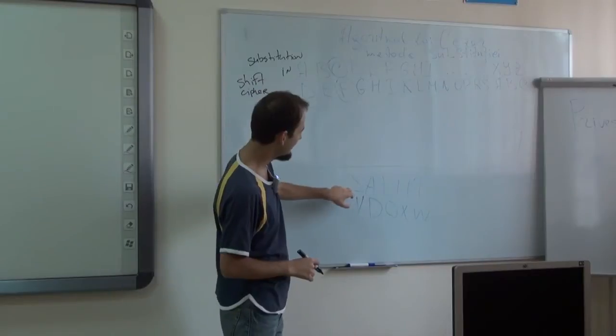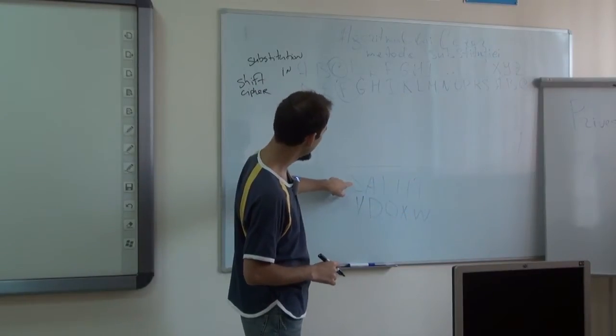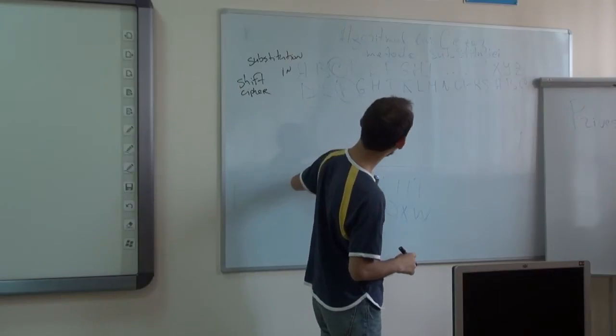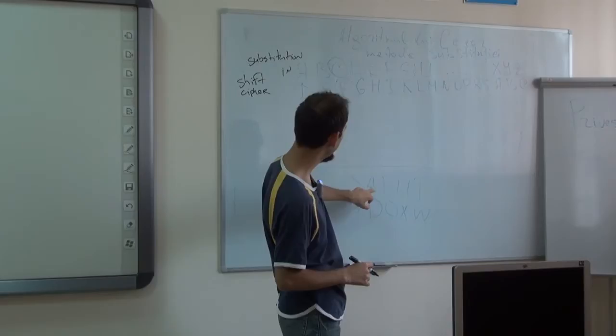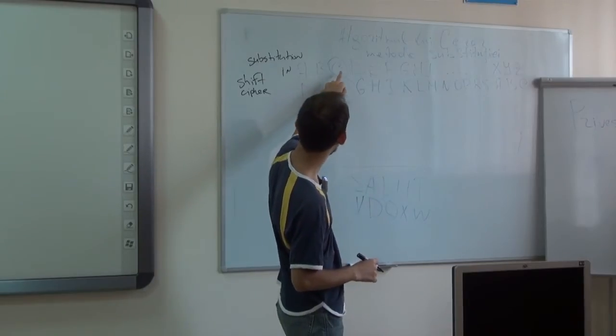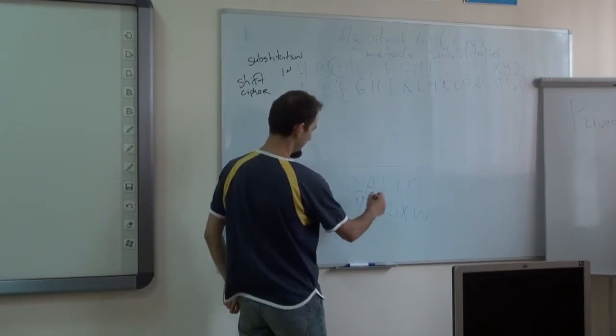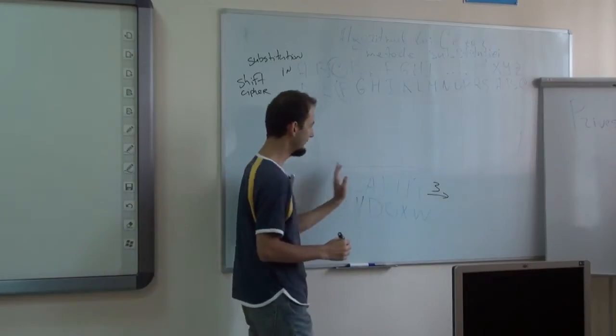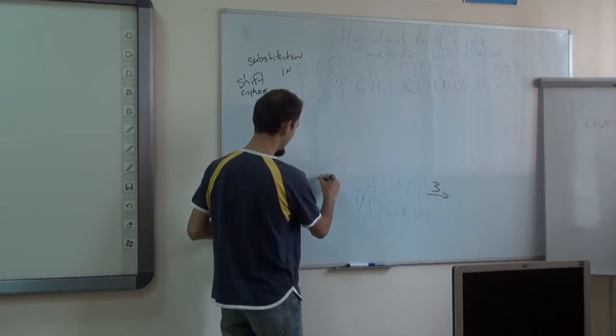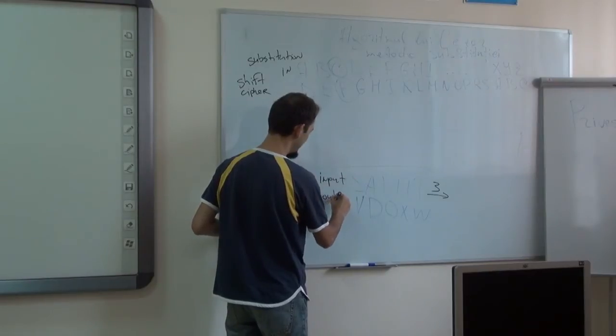So the string solute becomes, so if you shift S... it's not there. So if you shift A 1, 2, 3 times, it becomes D. So if you shift to right three times, this is your input, and this is your output.